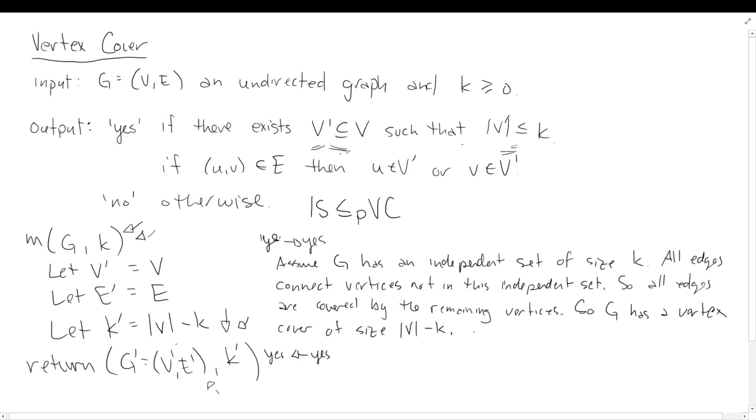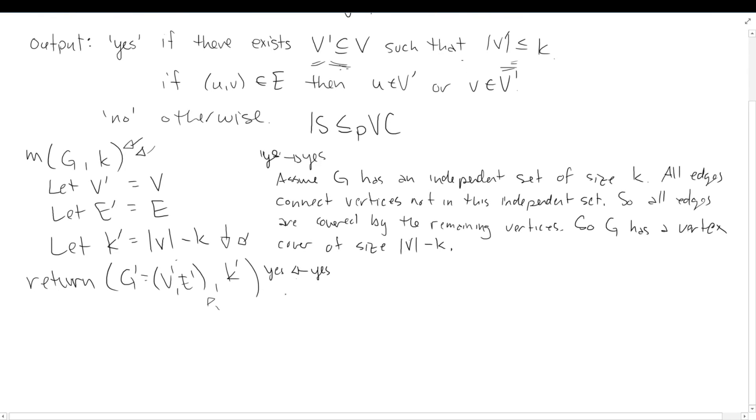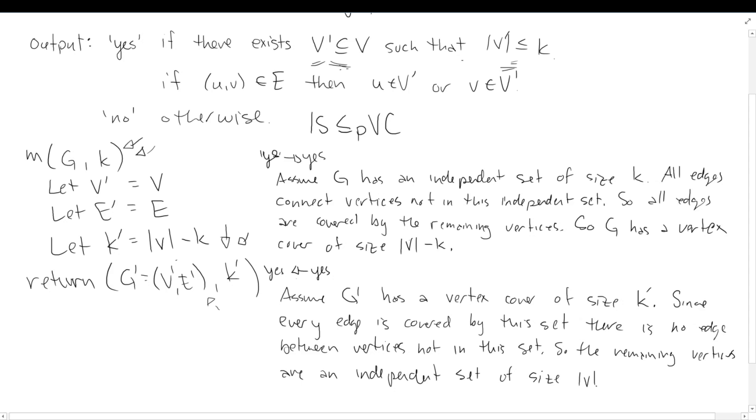Now I usually like to do yes implies yes backwards because we should be getting the exact same argument again. So we're just going backwards now. So I'm starting at the end. I'm going to say assume G prime has a vertex cover of size K prime. We're going to use this same argument here. So since every edge is covered by this set, there is no edge between vertices not in this set. So there's no edge between vertices not in this set. So the remaining vertices are an independent set of size V minus K prime, which is equal to K. So we're done.